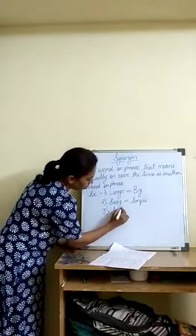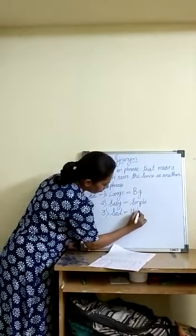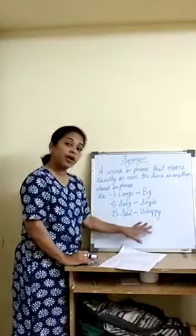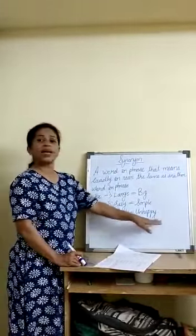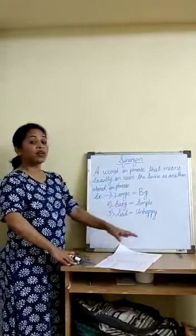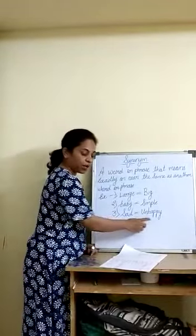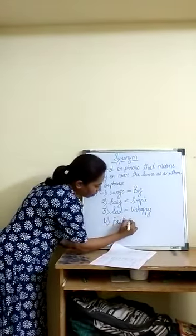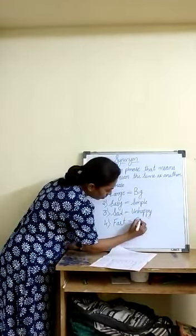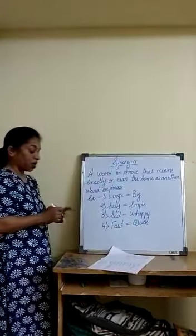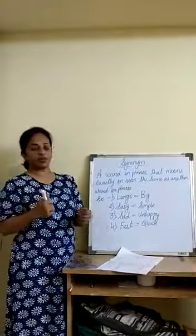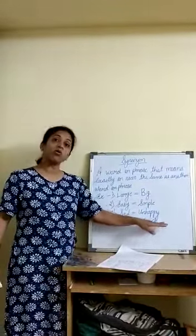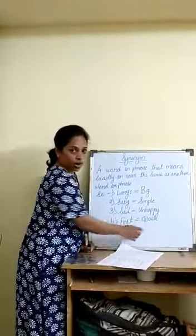Next example: 'sad' is equal to 'unhappy'. I am very sad with you. I am unhappy with your behavior. Sad and unhappy are synonyms. Next is 'fast' — equal to 'quick'. Drive the car fast. Drive it quickly. We have to reach soon. Fast and quick are the same.